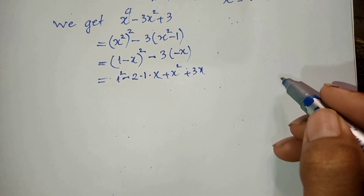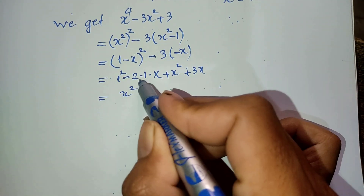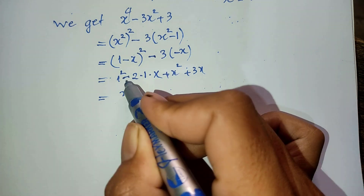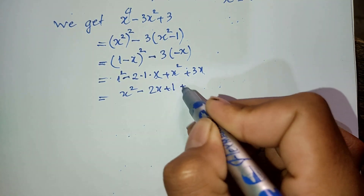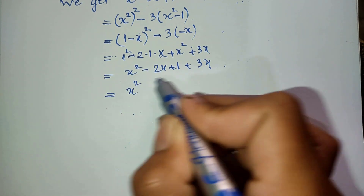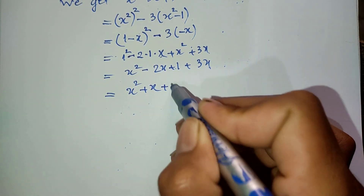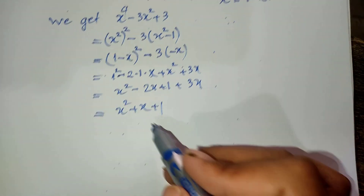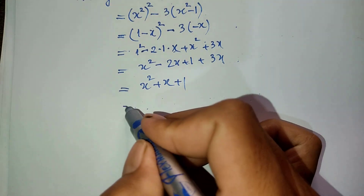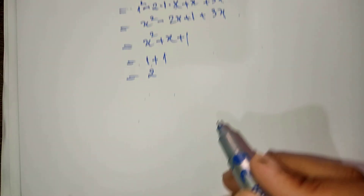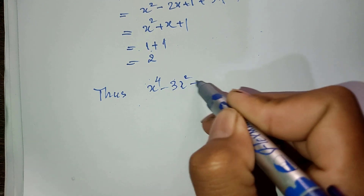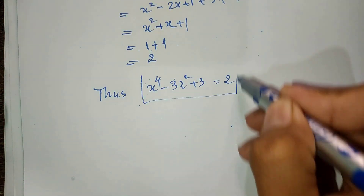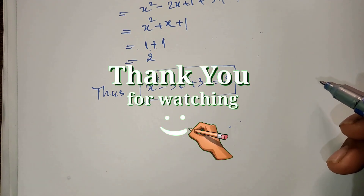This gives us x squared minus 2x plus 1 plus 3x plus 3. And we get x squared plus x plus 1. We know x squared plus x equals 1, so we get 1 plus 1 equals 2. So x power 4 minus 3x squared plus 3 is equal to 2. That is our solution. Thank you for watching — if you like my videos please don't forget to subscribe to my channel for more exciting videos. Goodbye!